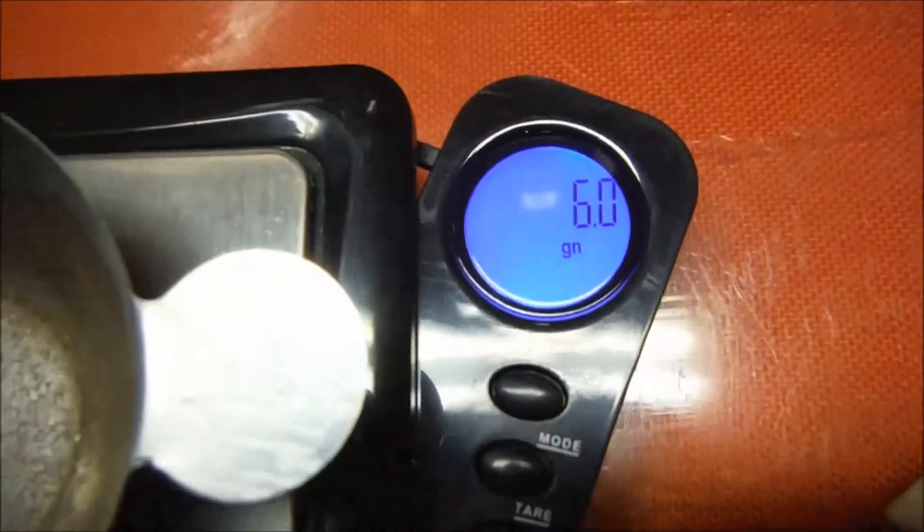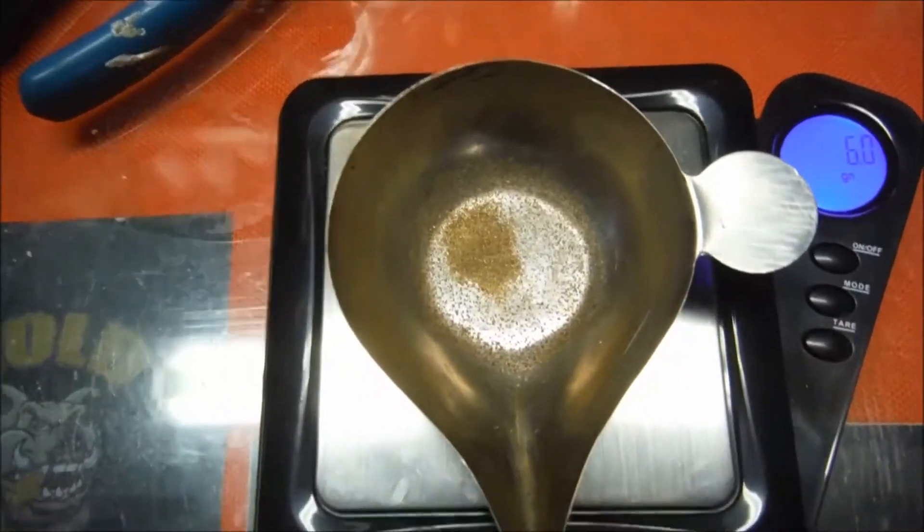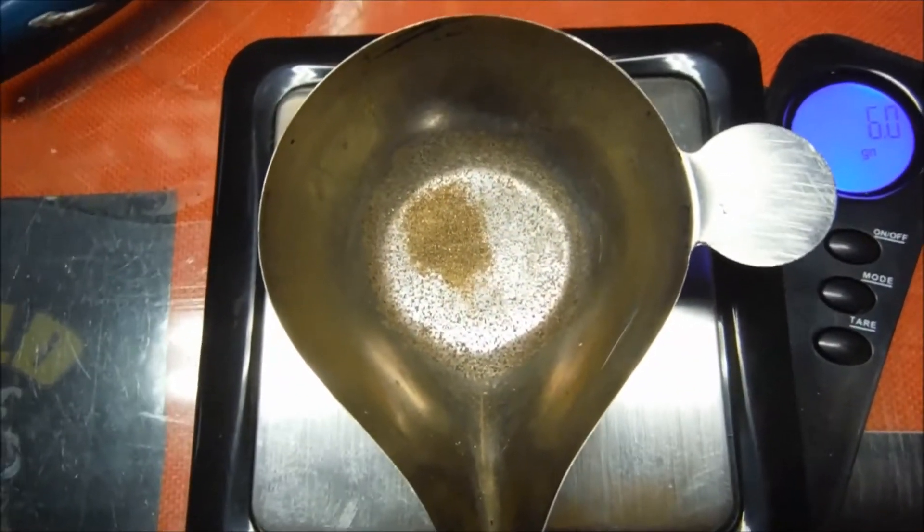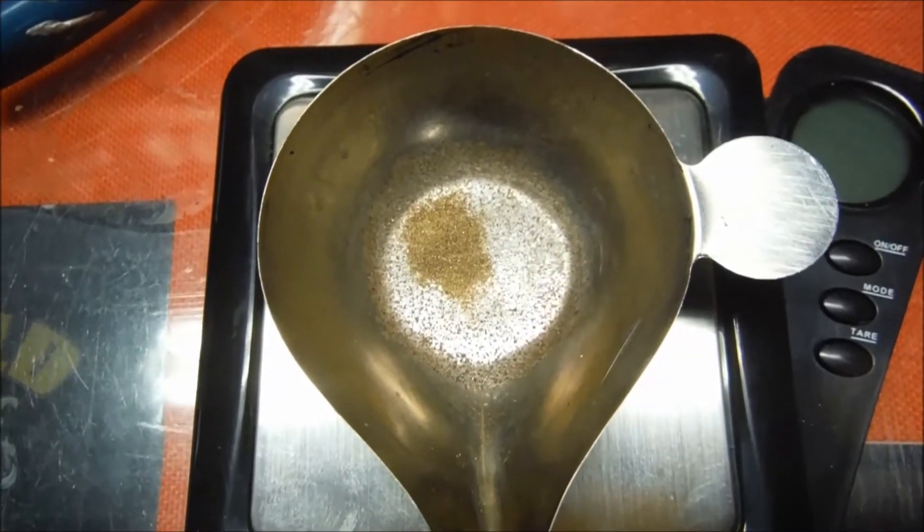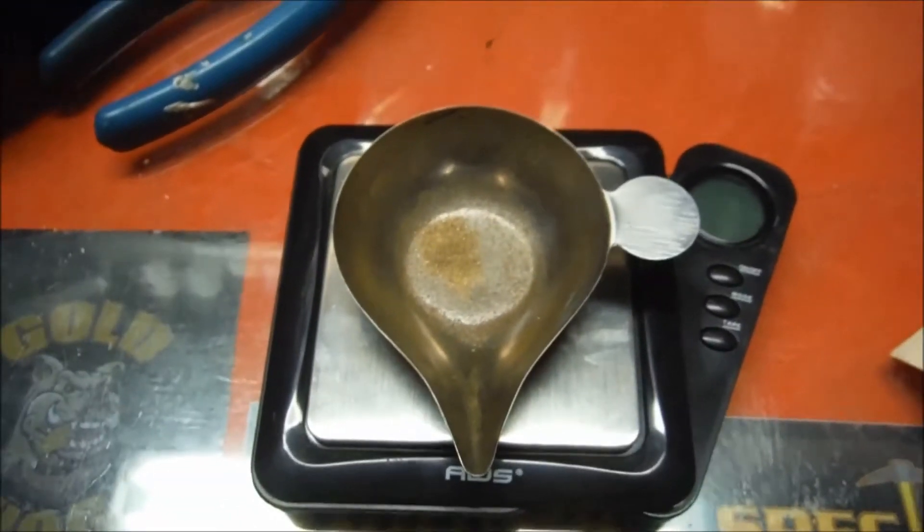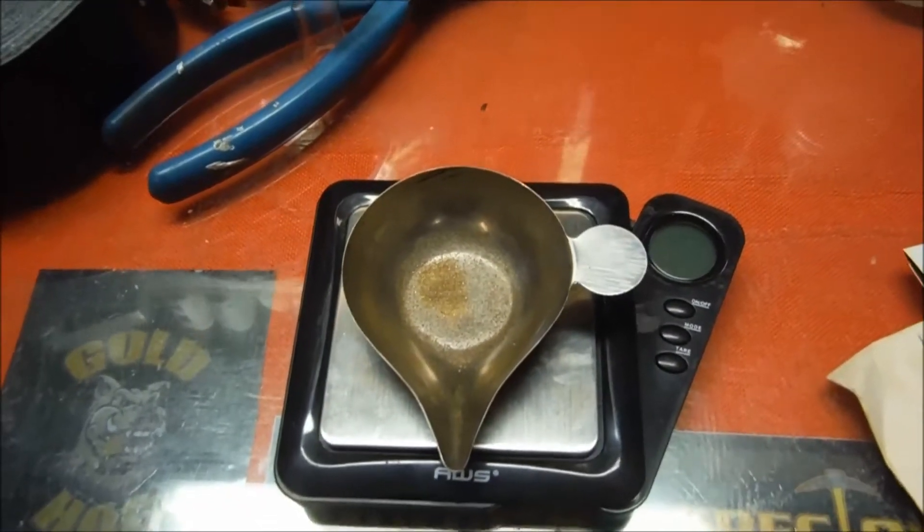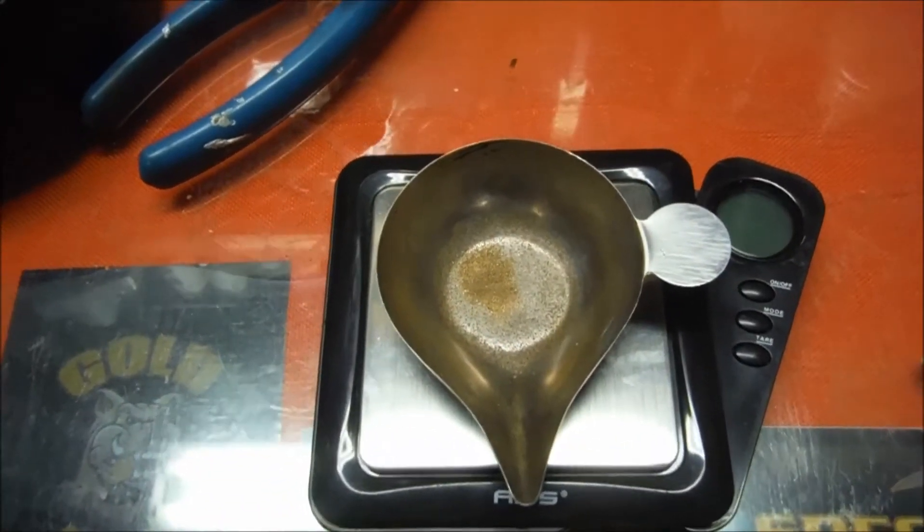There's six grains, six grains of gold is all there is. And I figured there's at least... I know there was a minimum of ten grams of gold ran through, like six different runs or seven different runs, and possibly a lot more than that.